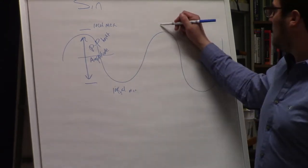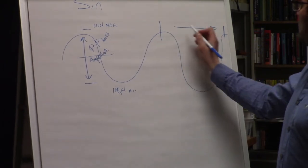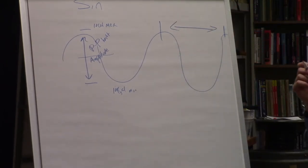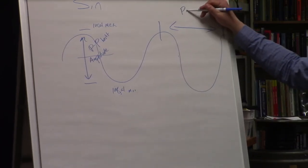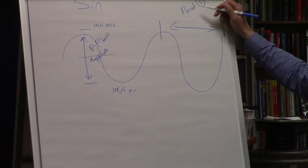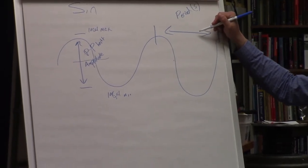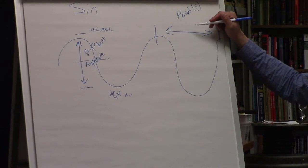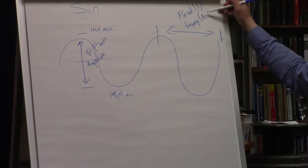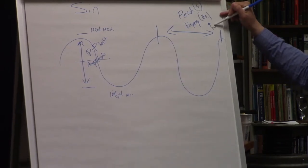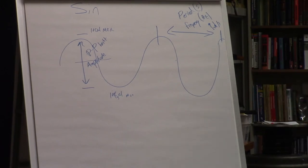From one point on the wave to the same point in the next cycle, that defines the period. The reciprocal of the period is frequency, measured in hertz or radians per second. Now let's relate this to the real world and make it a real system.